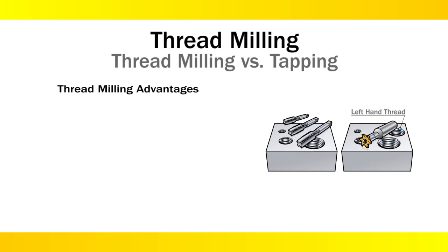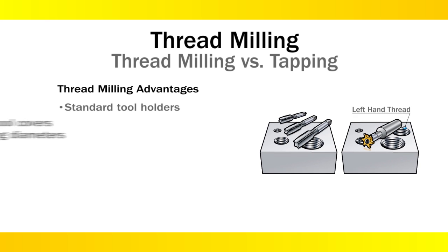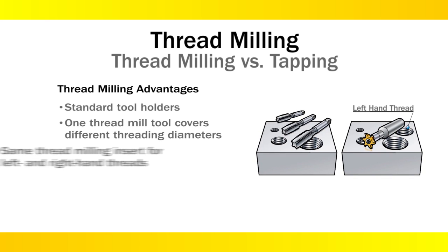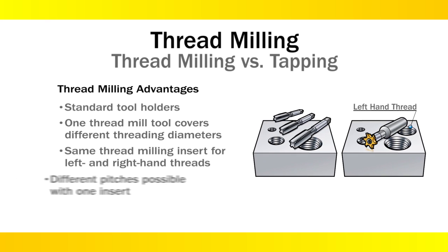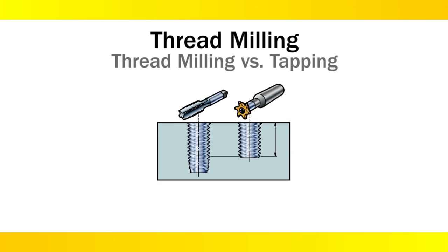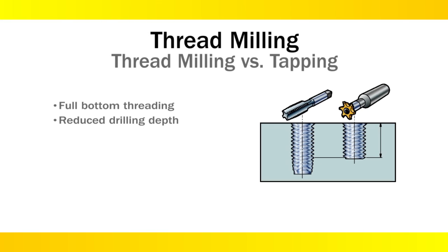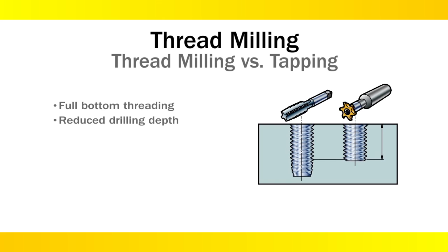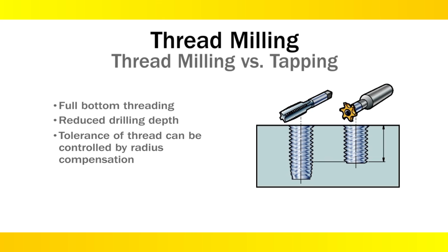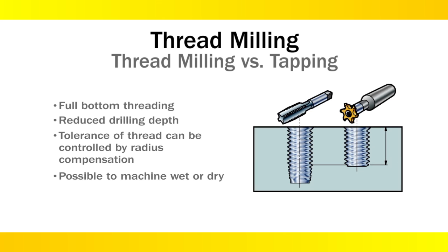Thread milling has many advantages over tapping as well. A range of thread diameter sizes and pitches can be used by the same tool. Plus, left and right hand threads can be accommodated with the same insert, unlike a tapping tool. Due to a thread mill's shape, it can also achieve full bottom hole threading without the need to drill to an extra depth. Thread mills can also be programmed with radius compensation and with no coolant in many cases, making them more adaptable.